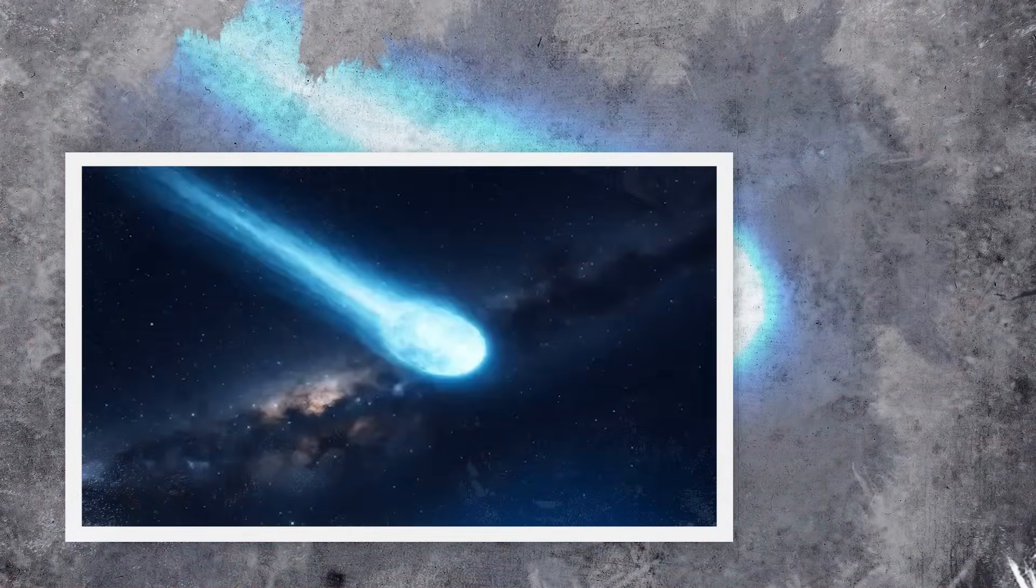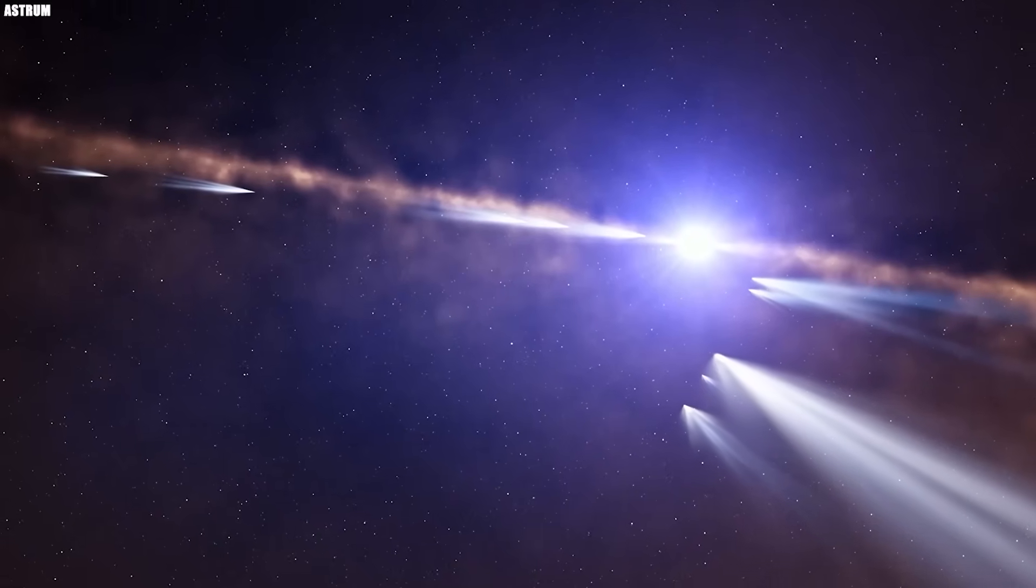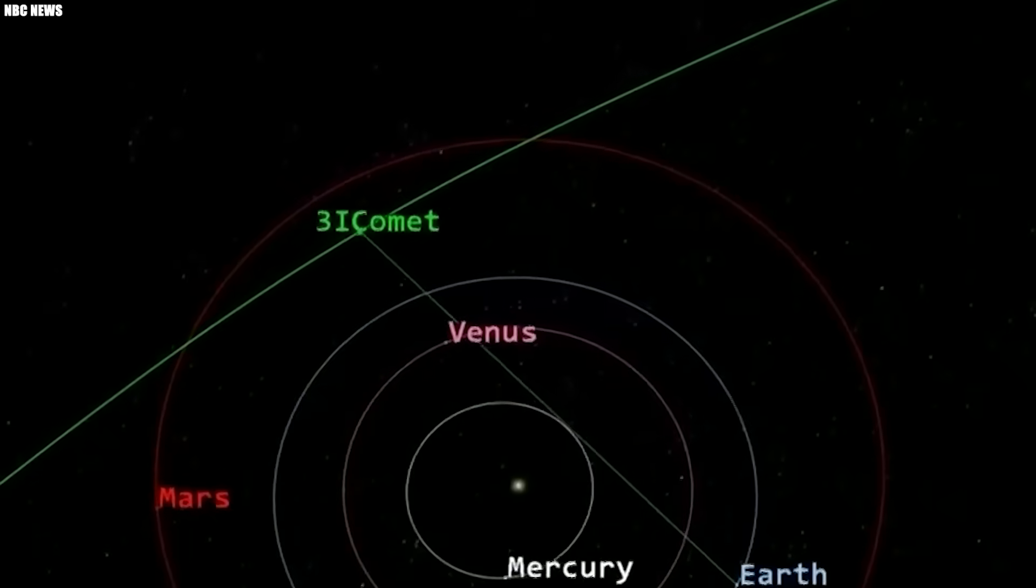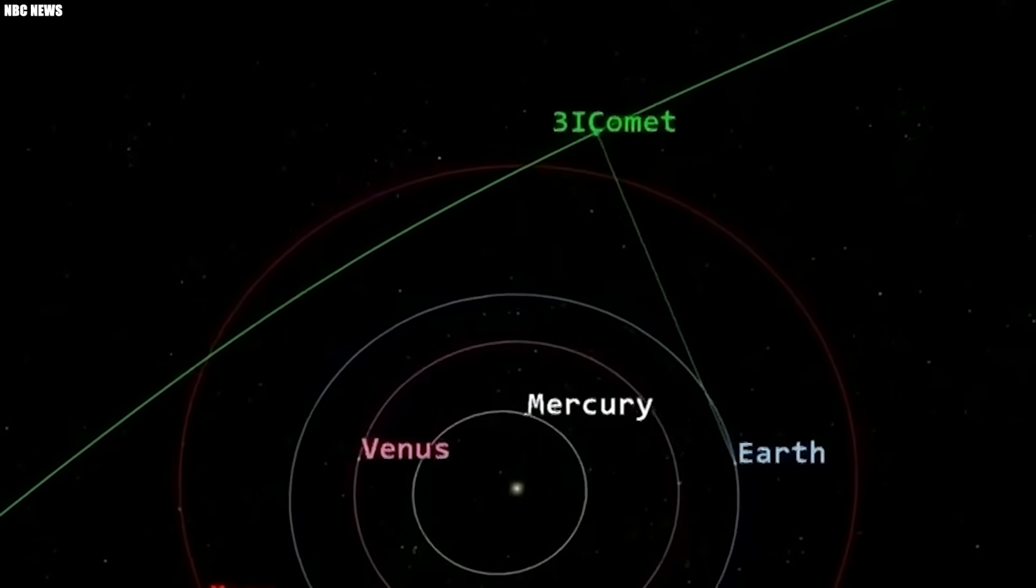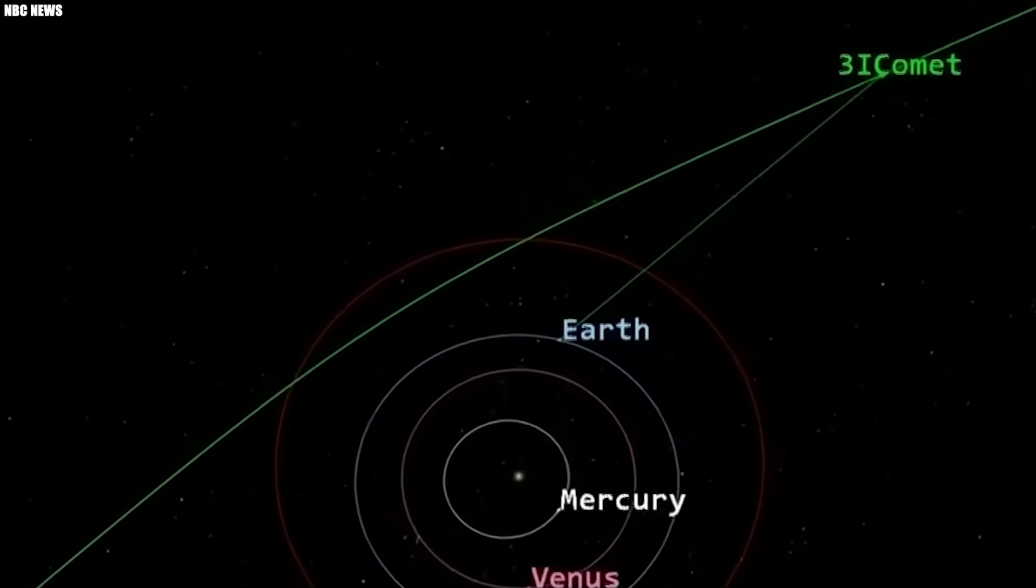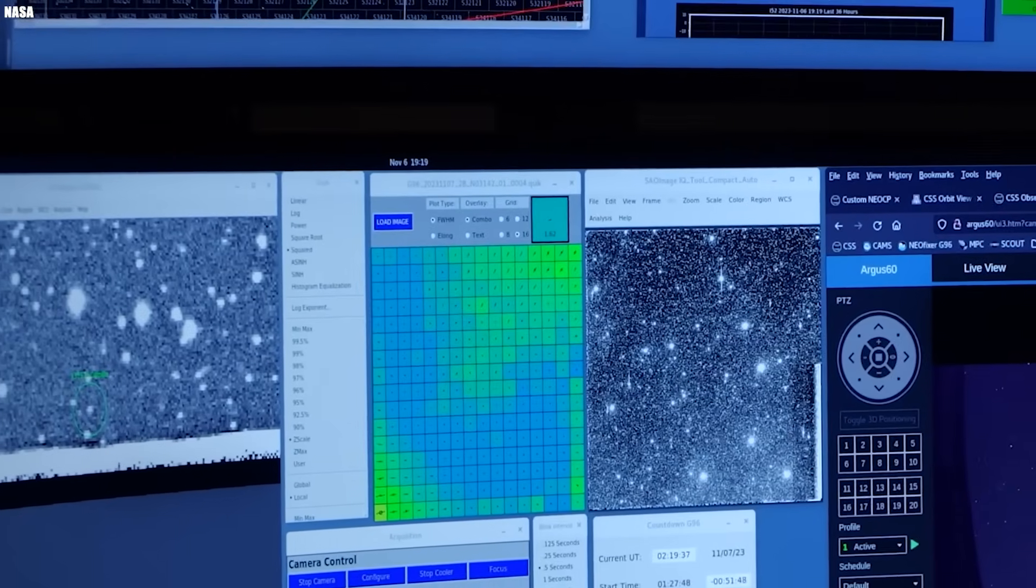3I Atlas is not from here. It is on a hyperbolic trajectory, which means it is moving too fast to be captured by the sun's gravity. It won't loop back. It won't return. Moving so fast at 60 kilometers per second, that's 600 times the fastest race car that we have on Earth.